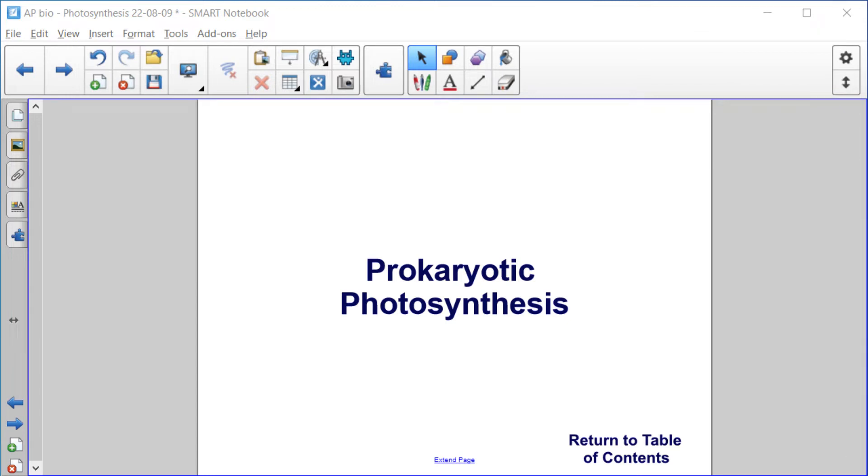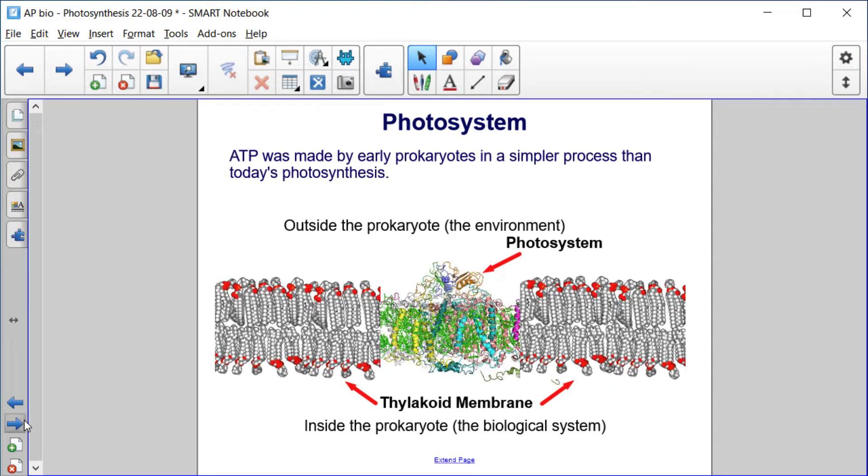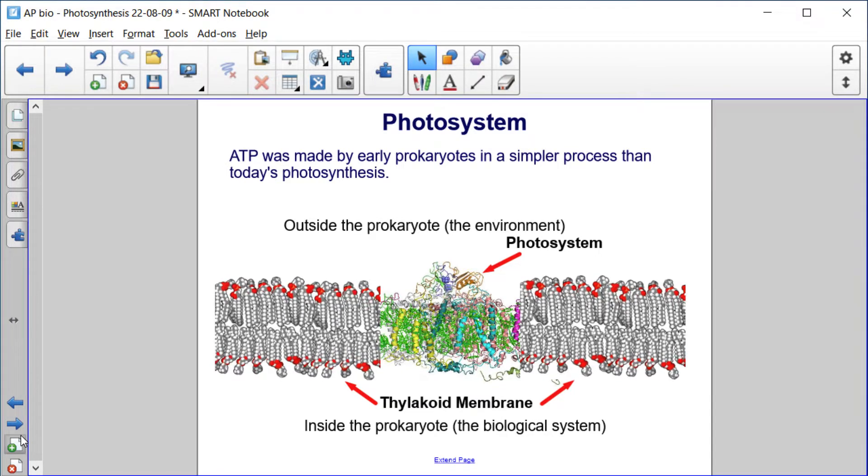In this section, we're going to cover prokaryotic photosynthesis. By early prokaryotes, ATP was made in a much simpler process than in today's photosynthesis.